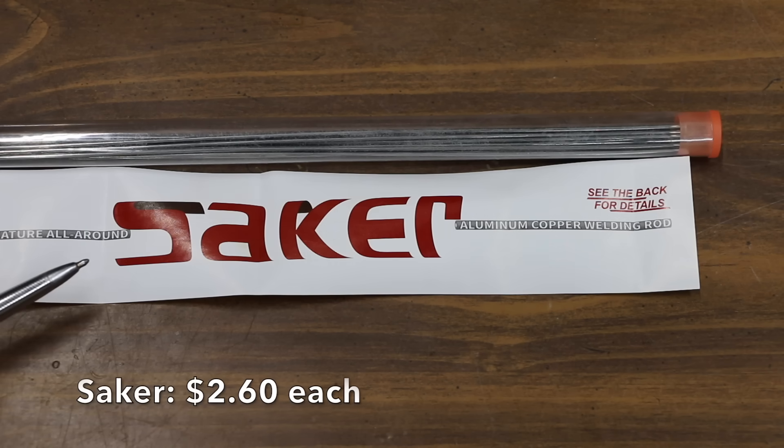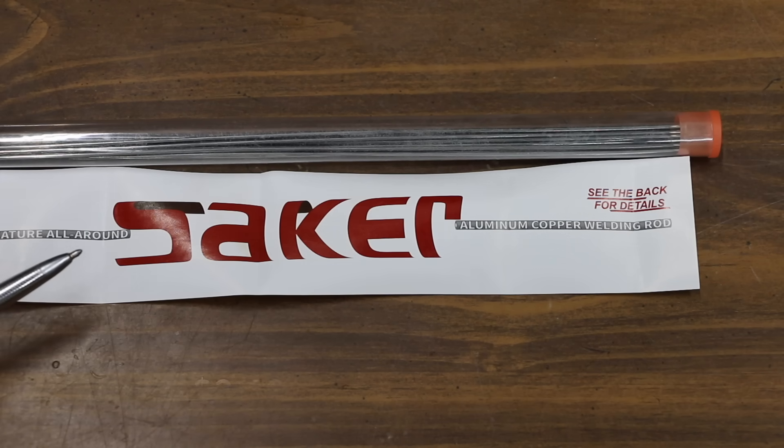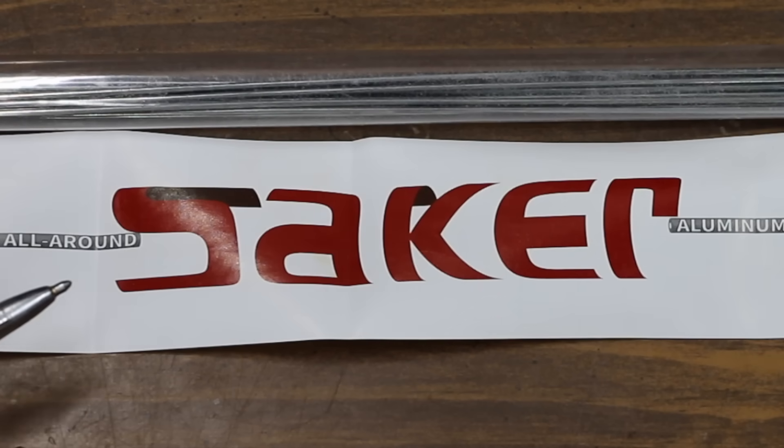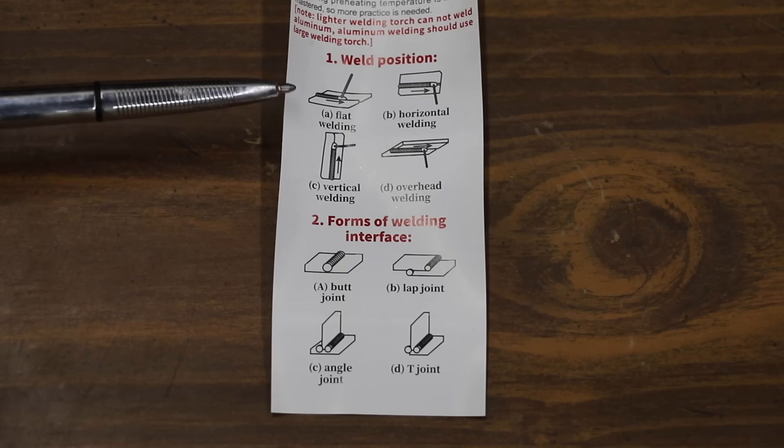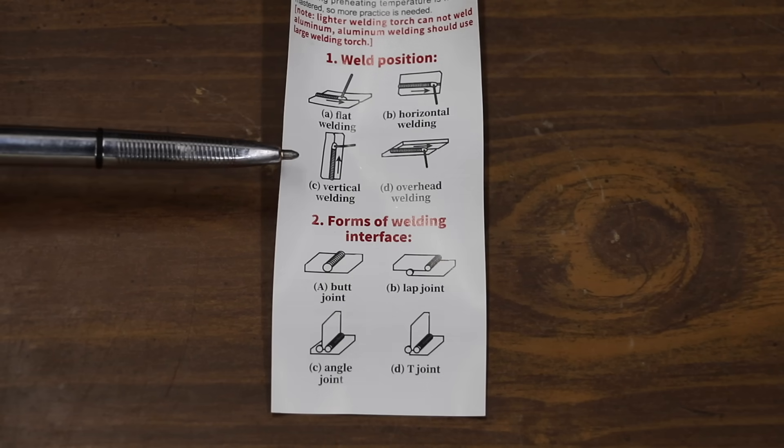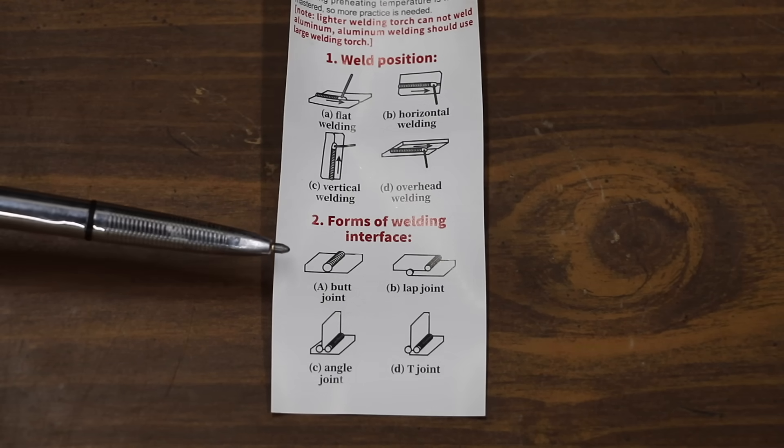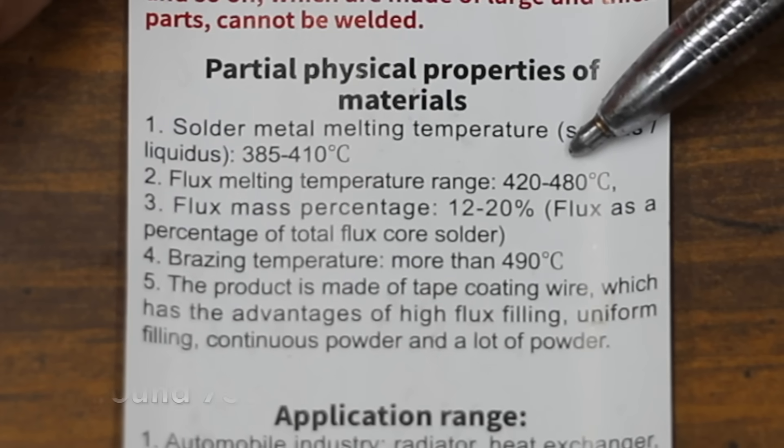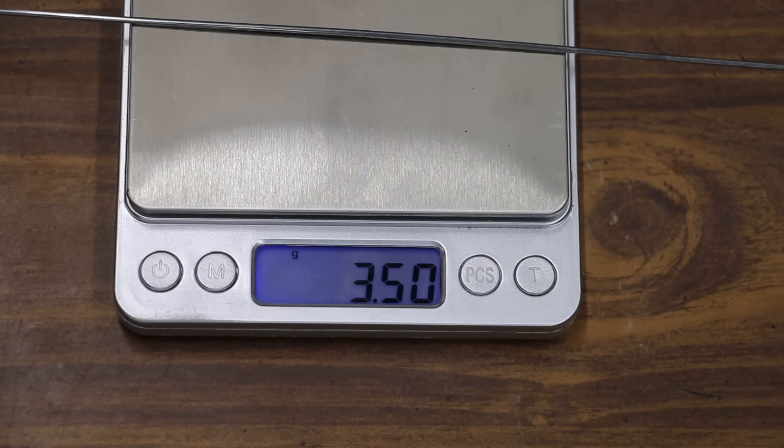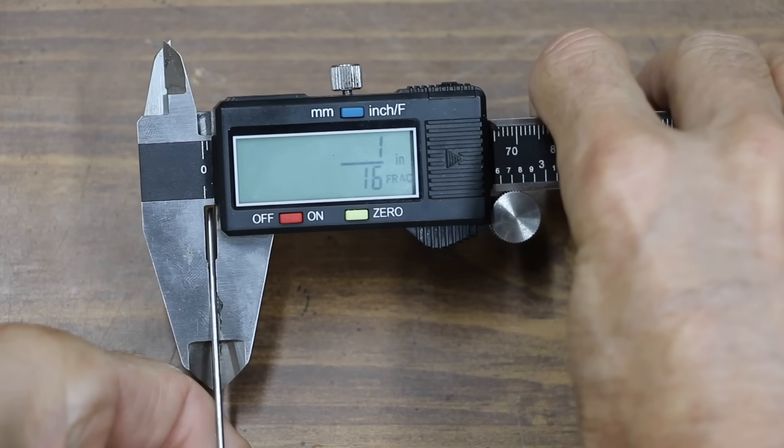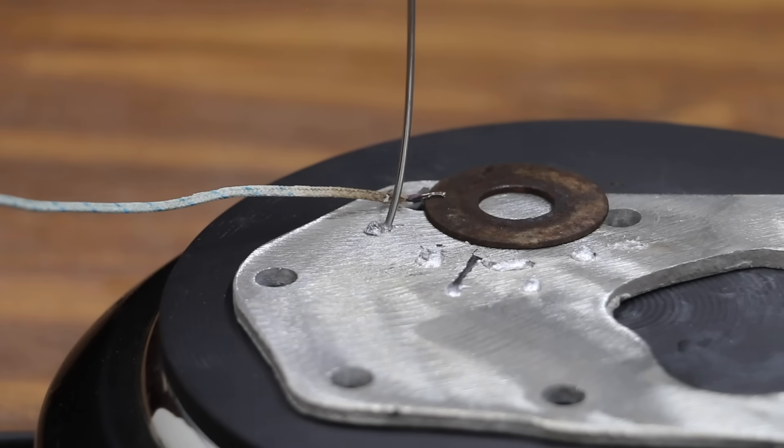The second most expensive brand we'll be testing, costs right at $25.99 for 10 welding rods, or $2.60 each, and is made by Saker. The Saker brand does come with a pretty good set of instructions on how to properly use their brand. The Saker brand is made in USA. The melting temperature is 385 to 410 degrees Celsius. 3.5 grams. 1/16 of an inch. Unlike the other brands, the Saker has a flux core, and it definitely took more heat to melt than all the other brands, except for Icy.